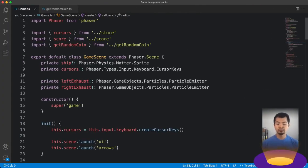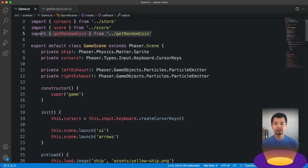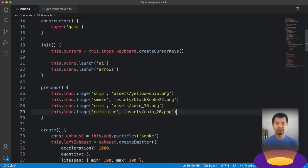Here we are in VS Code. So this is the example from our MobX state management video where we have a spaceship and you can collect coins. We've added this getRandomCoin function and we'll show you that in a second. But what we've also done is added this blue coin.